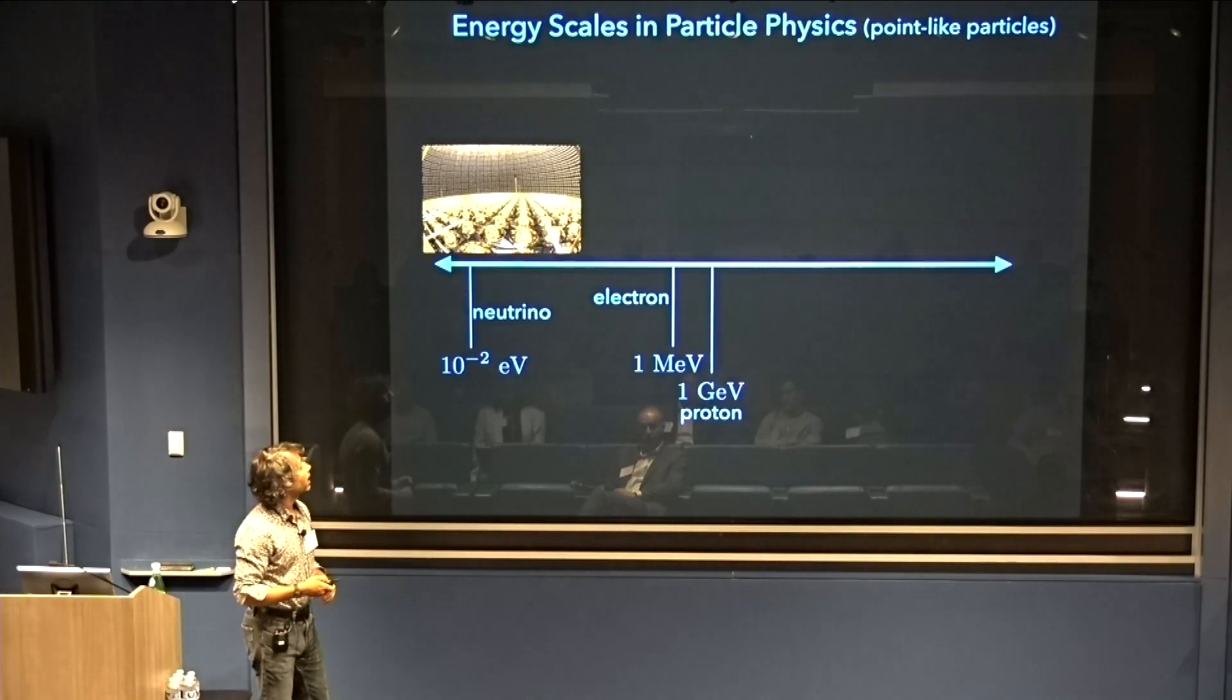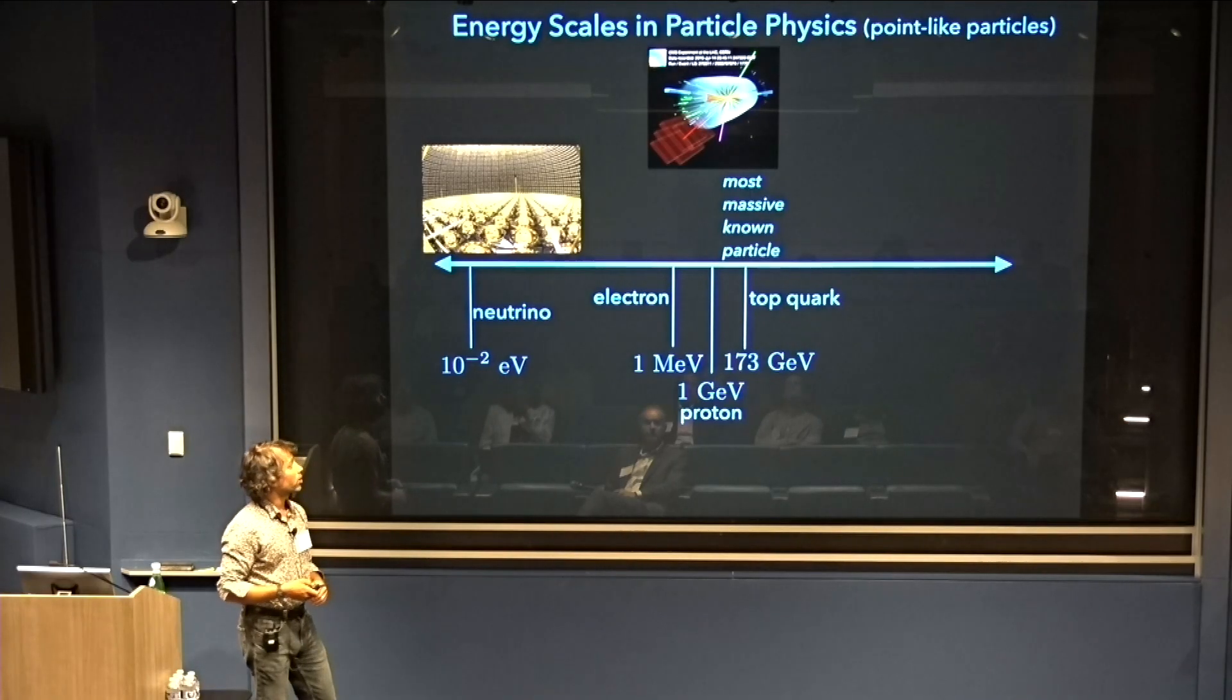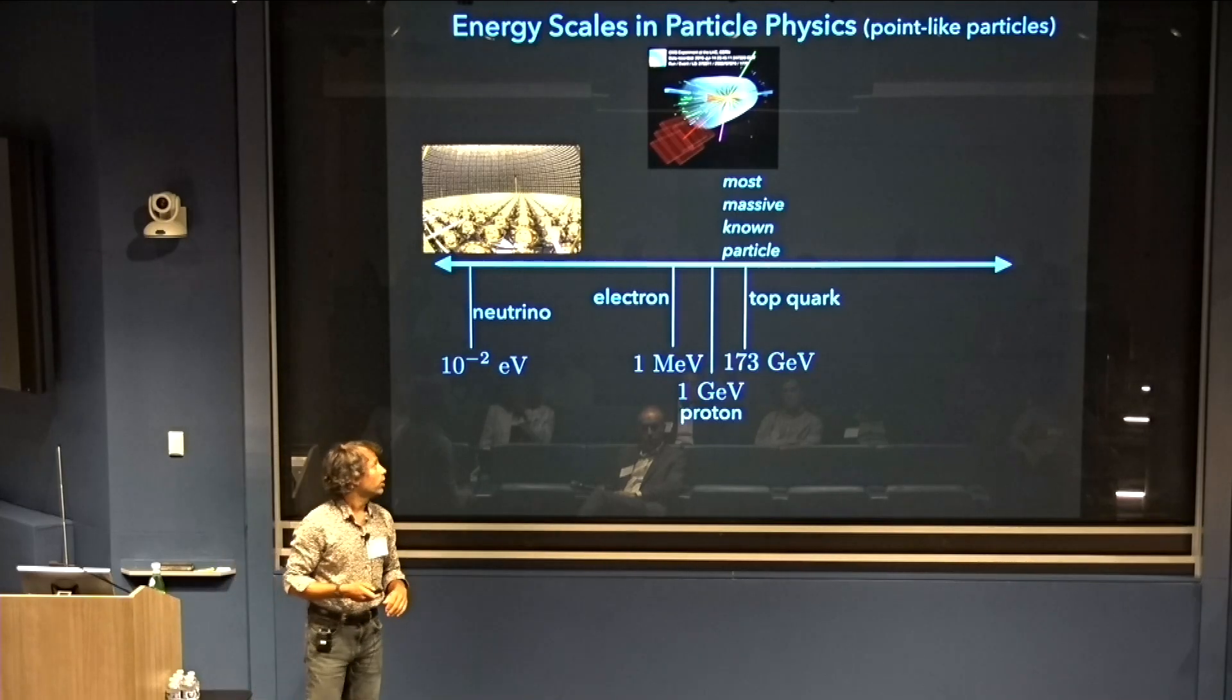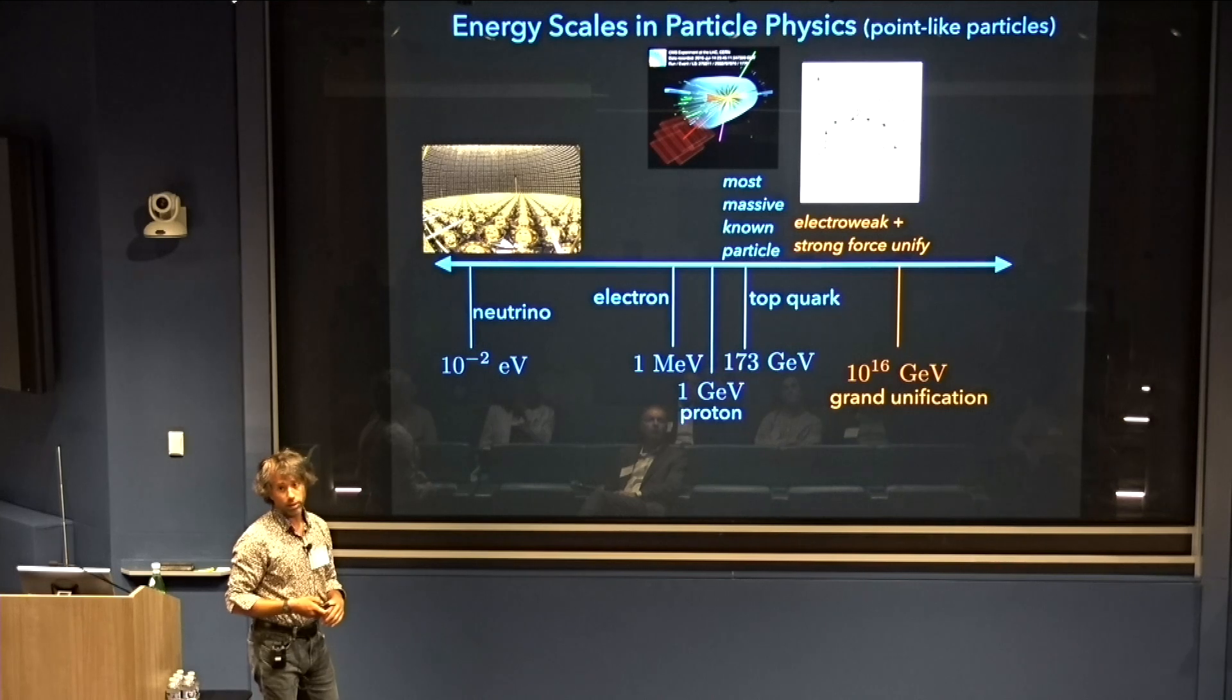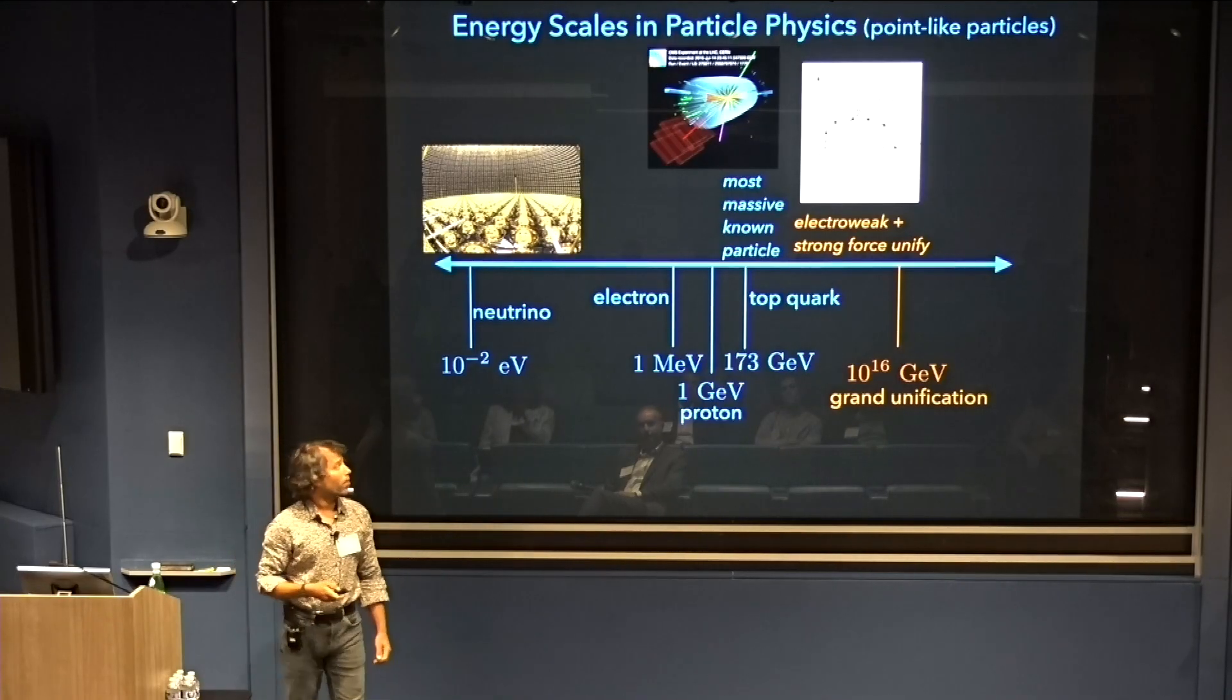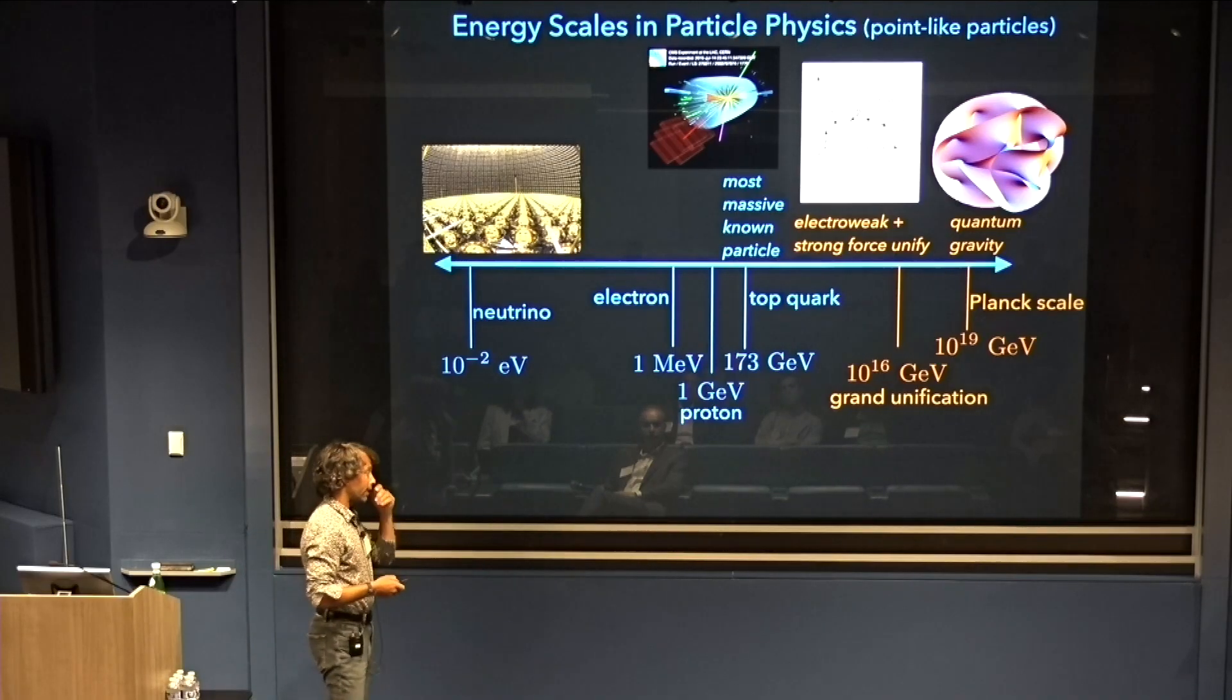Going up in mass, we get to the electron, the proton. There's a whole zoo of particles leading all the way up to the top quark, which is the most massive known particle. Going beyond this in energy scales, everything becomes speculative. We expect the electroweak force and the strong force unify into the grand unified force at a scale around 10 to 16 GeV. I'll be referring to this GUT scale throughout this talk. Going up higher in energy, we expect that these forces unify with gravity at some scale around the Planck scale, around 10 to 19 GeV.